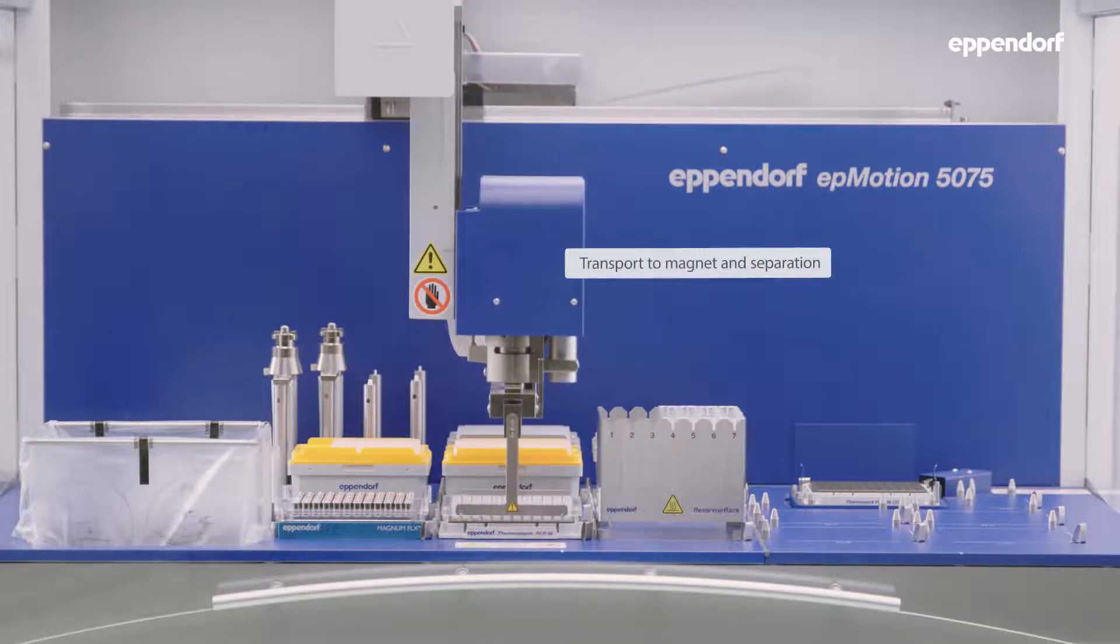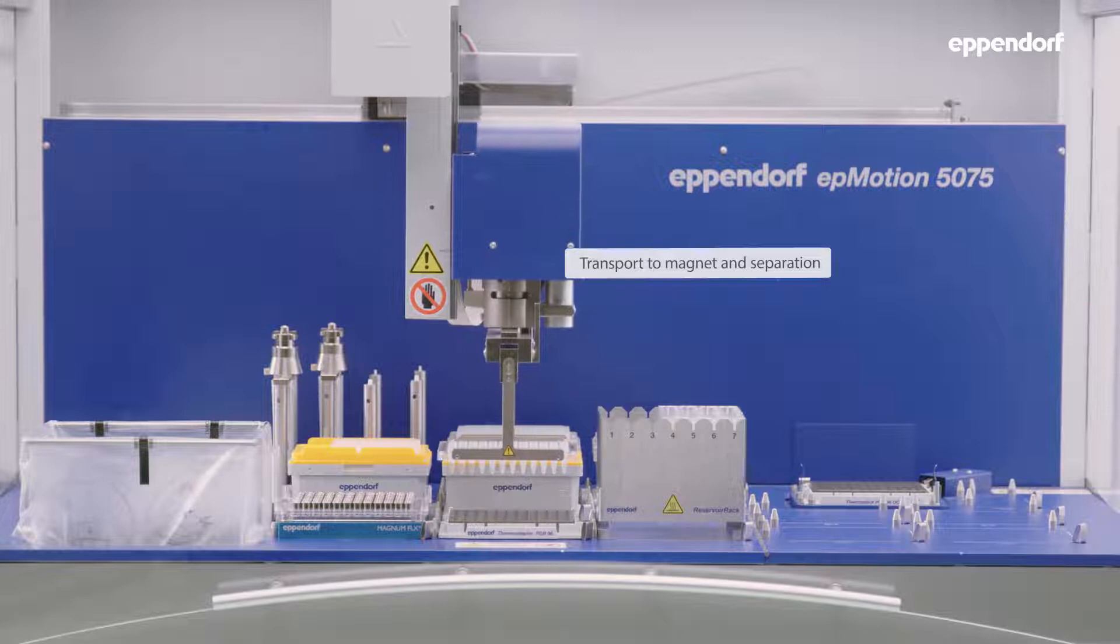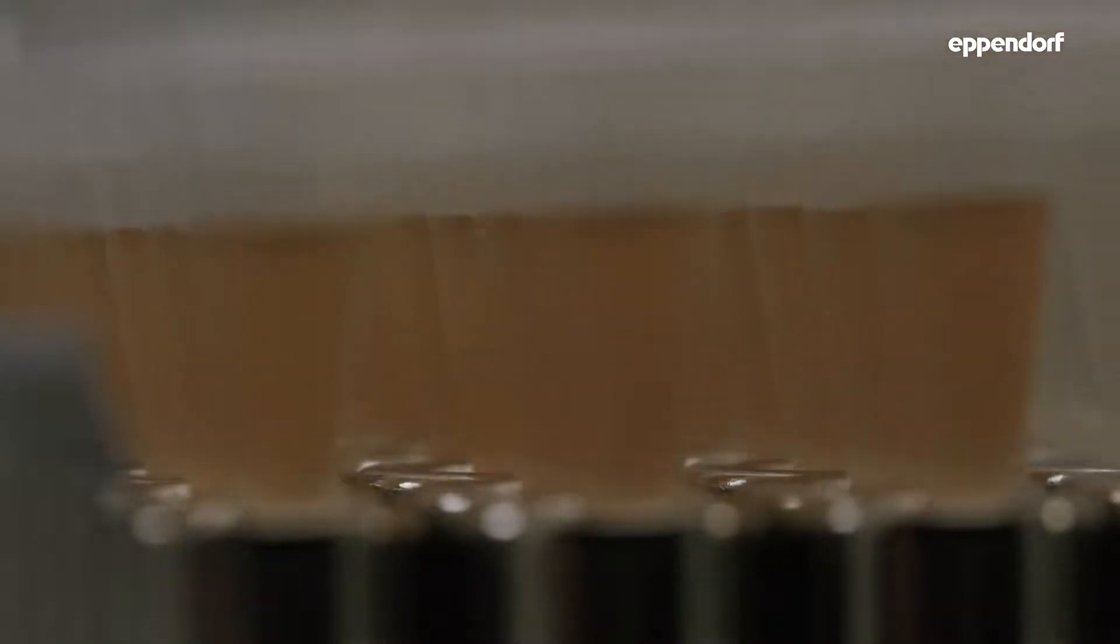For the following bead washing steps, the sample plate is moved onto the magnet plate using the gripper tool. Nucleic acids bound to the magnetic beads get separated from the supernatant on the magnet.